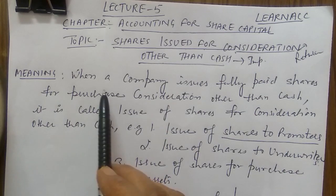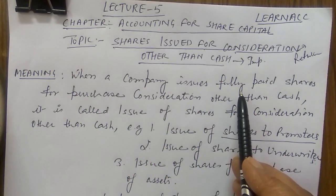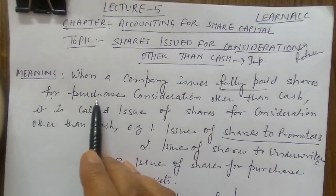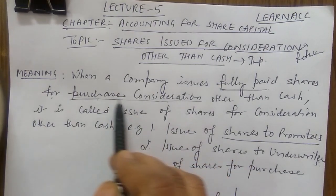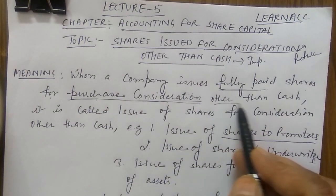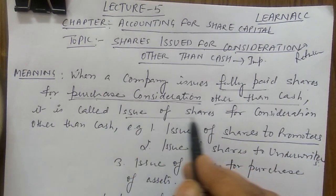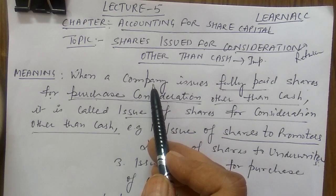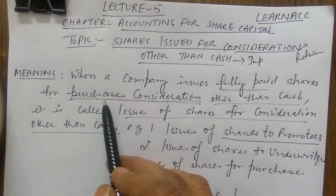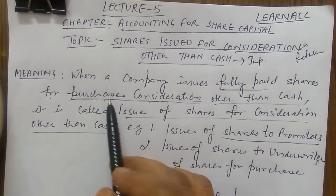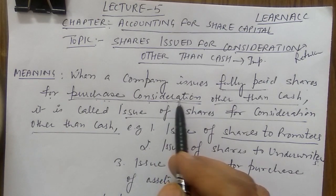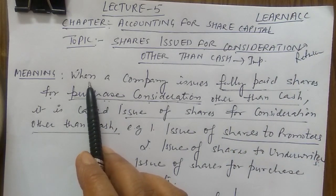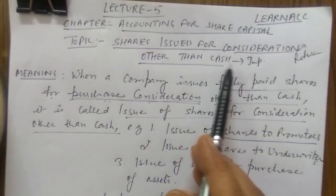When a company issues fully paid shares for purchase consideration other than cash, it is called 'issue of shares for consideration other than cash.' Simply put, when any company purchases something, it has to give purchase consideration in return. Instead of cash, the company gives its fully paid shares to the vendor — that is called shares issued for consideration other than cash.